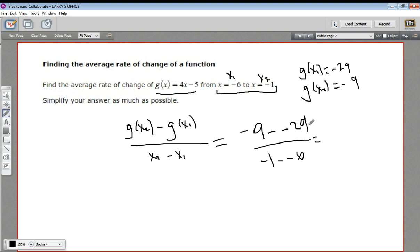Well, negative 9 minus a negative 29 is like negative 9 plus 29, so that's just 20. And negative 1 minus a negative 6 is like negative 1 plus 6, that's 5. 20 divided by 5 is 4.